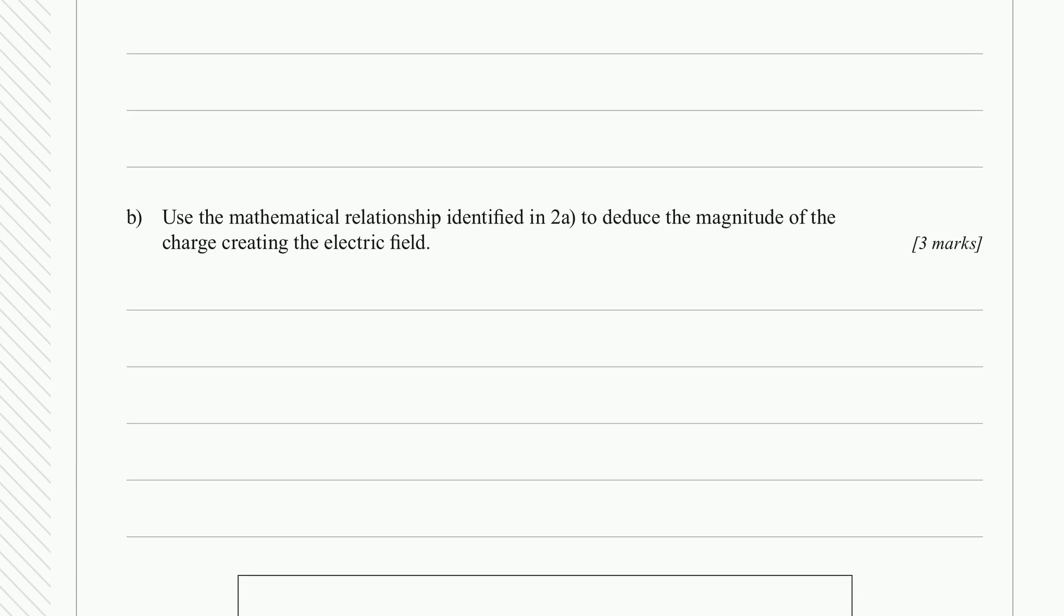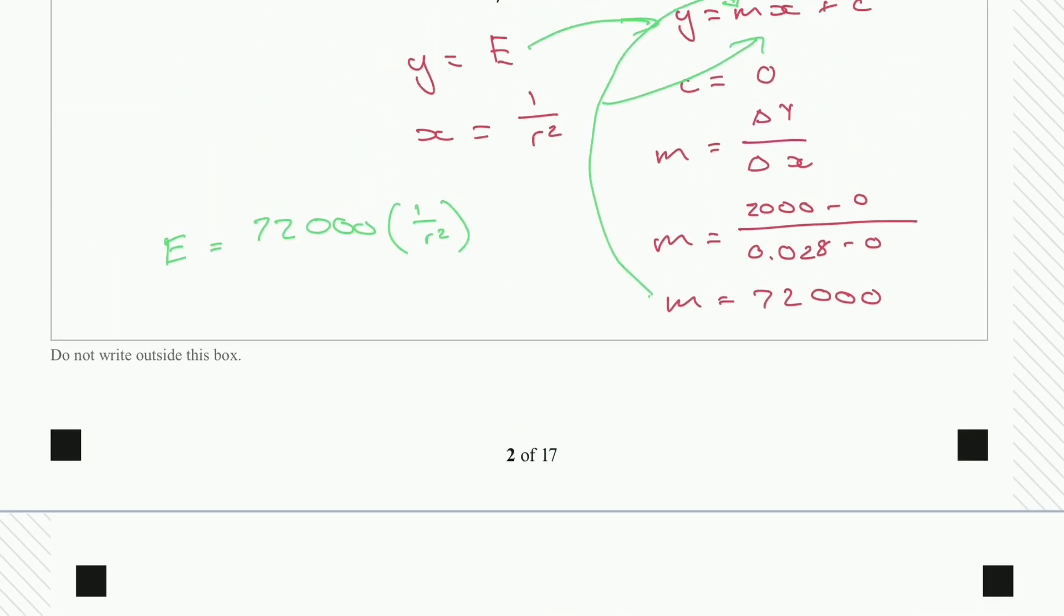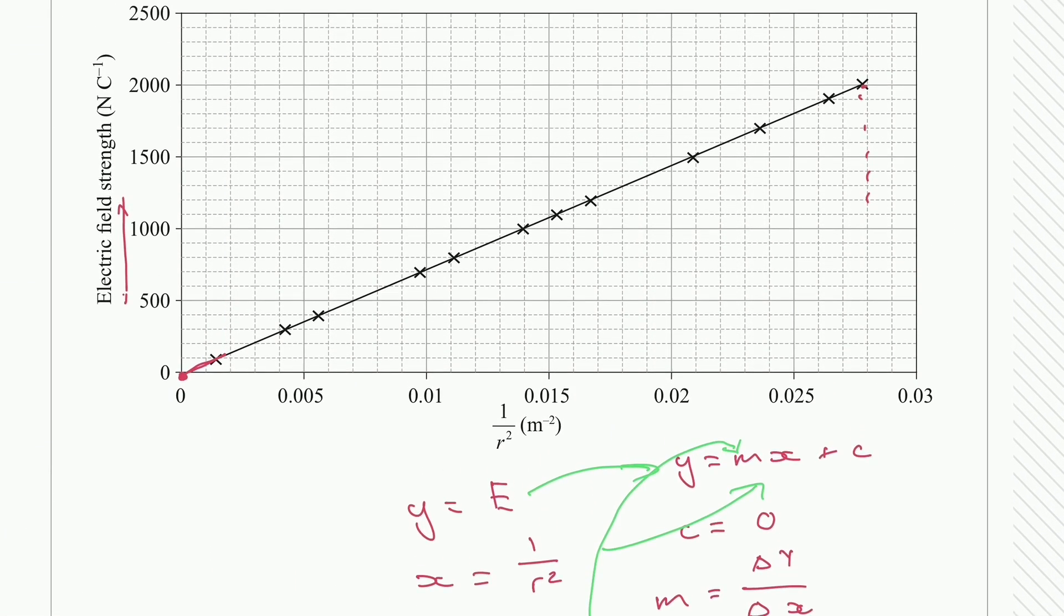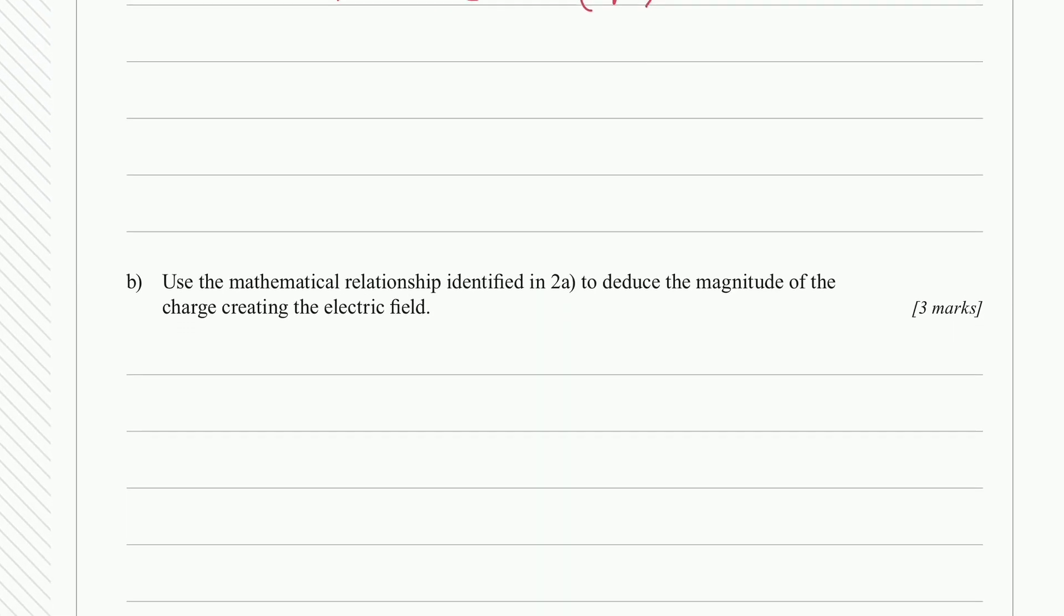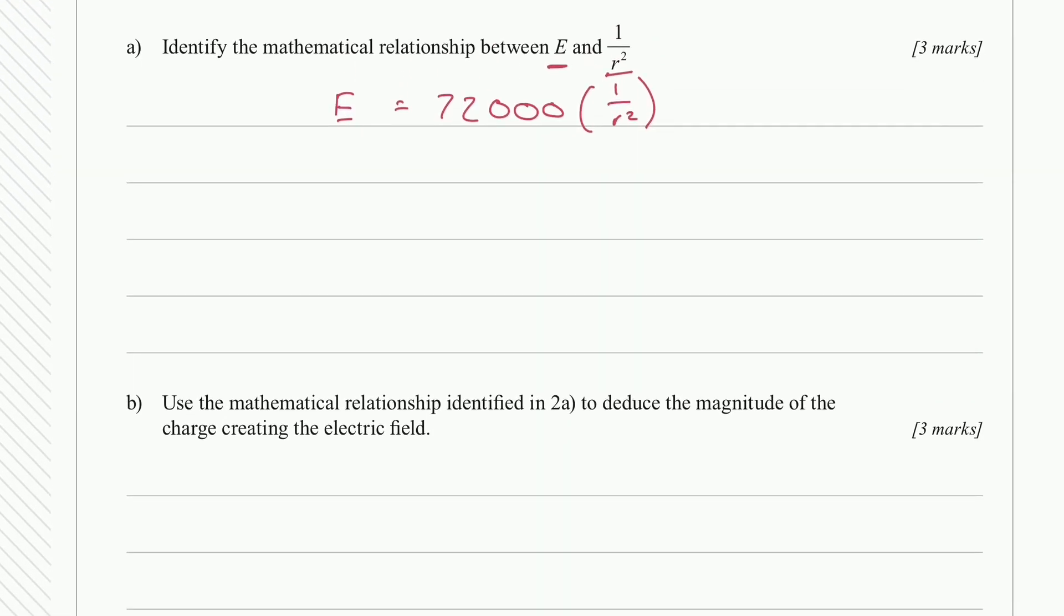Now part b, use the mathematical relationship identified in 2a to deduce the magnitude of the charge creating the electric field. So now we've got to think about the charge that creates this magnetic field. Now the charge is going to be constant in this magnetic field because we can see it isn't changing at all. It is a linear line.